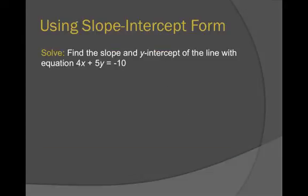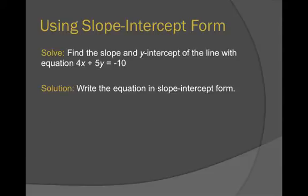Find the slope and y-intercept of the line with equation 4x plus 5y equals negative 10. What are we supposed to do? Any time you're asked to find the slope and y-intercept, get your line in slope-intercept form. That's just fancy math talk for solve for y. Get y by itself.